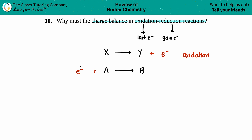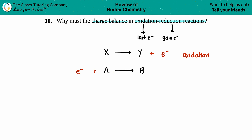Electrons on the reactant side indicate that you are gaining electrons. Whoever 'A' is will be gaining those electrons, and that is reduction.